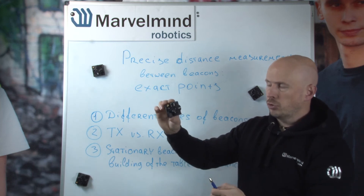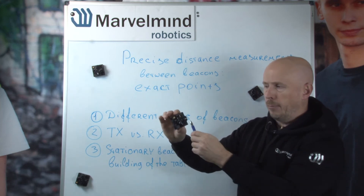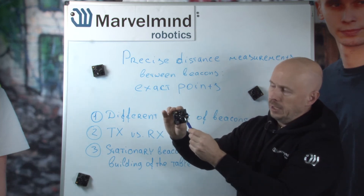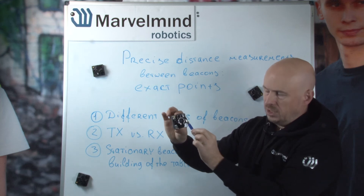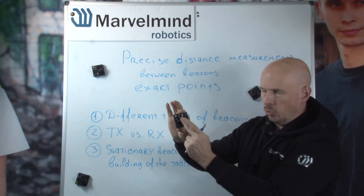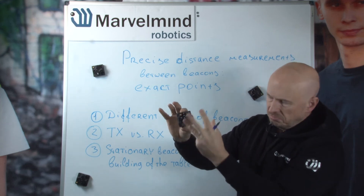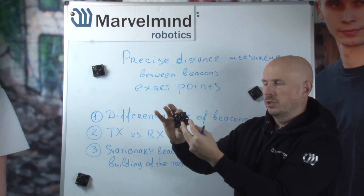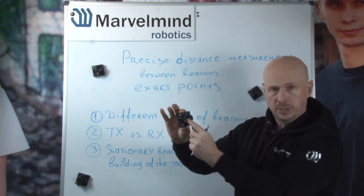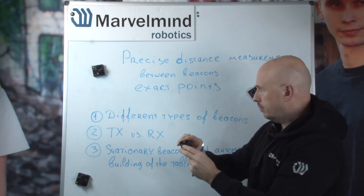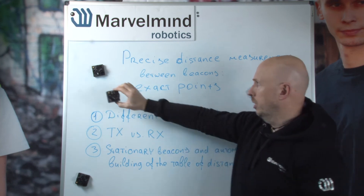For beacon hardware version 4.9, as a rule of thumb, the center one centimeter below the top is the most safe choice for the center of the beacon.